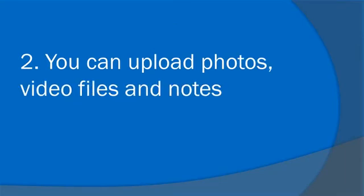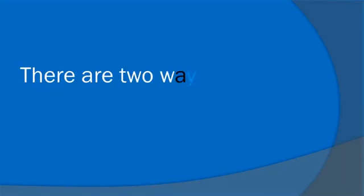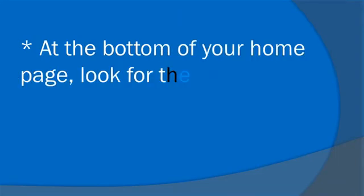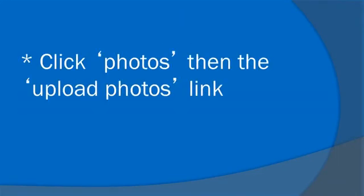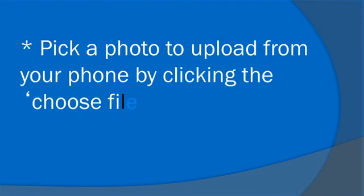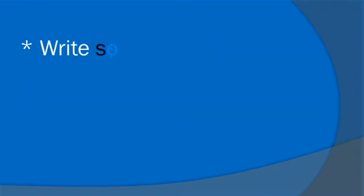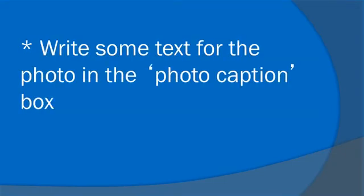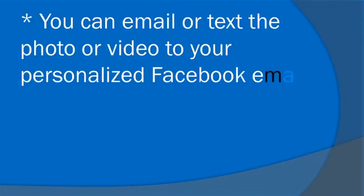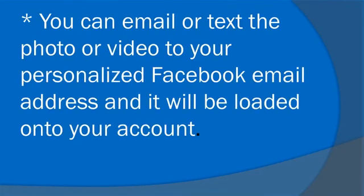You can upload photos, video files, and notes. There are two ways to do this. At the bottom of your homepage, look for the bookmarks link. Click photos, then the upload photos link. Pick a photo to upload from your phone by clicking the choose file button. Write some text for the photo in the photo caption box, then click upload. Or, you can email or text the photo or video to your personalized Facebook email address and it will be uploaded onto your account.